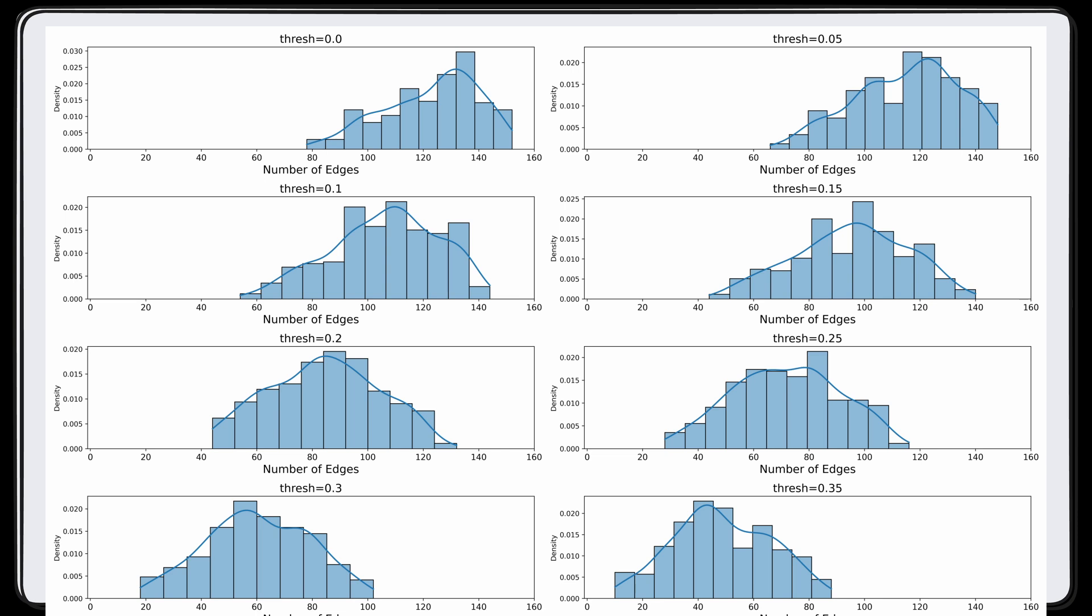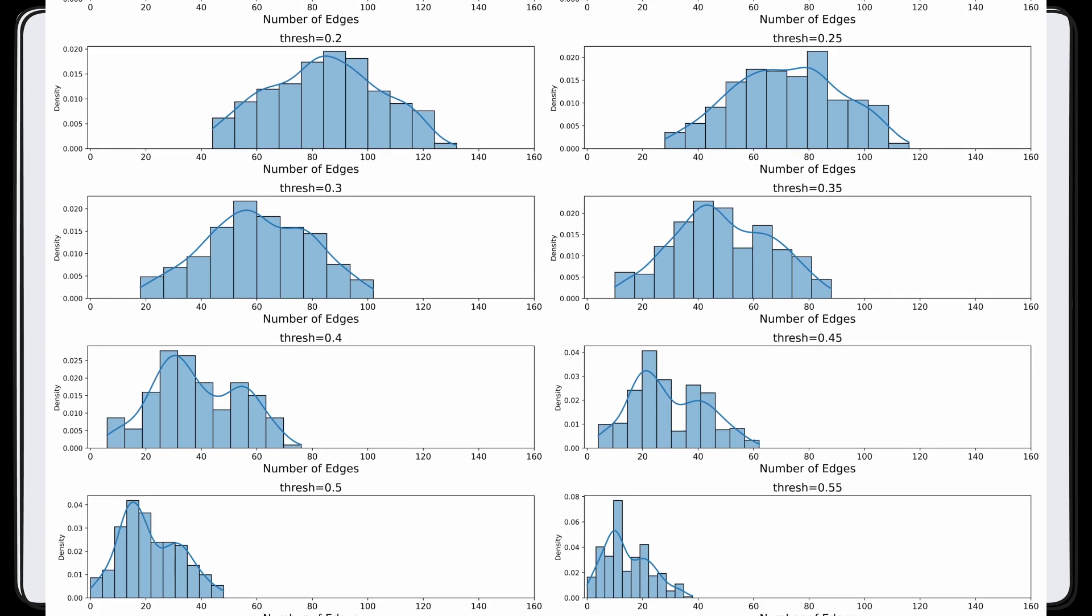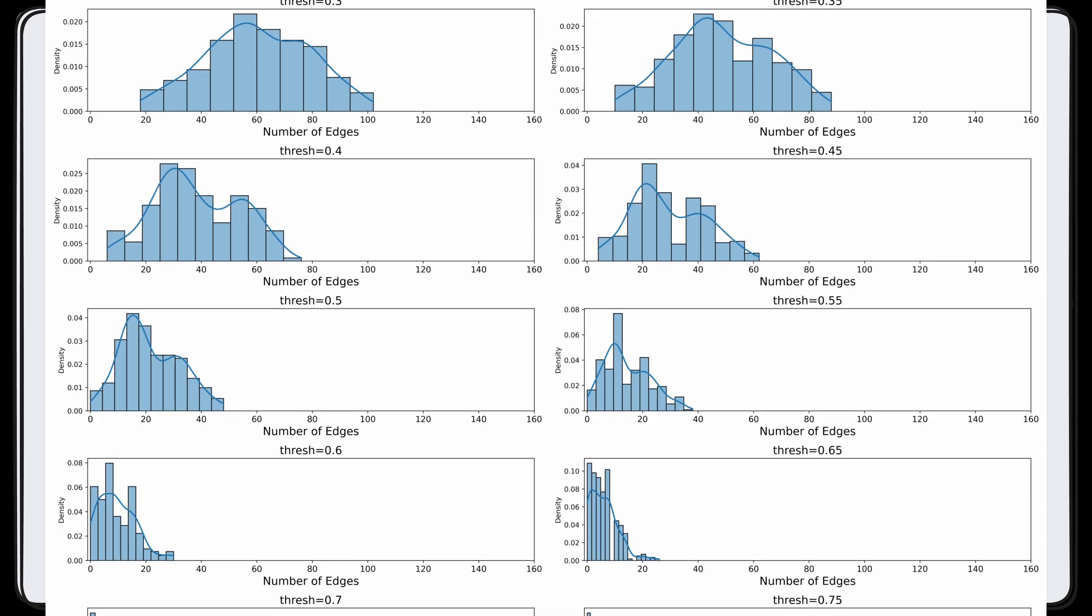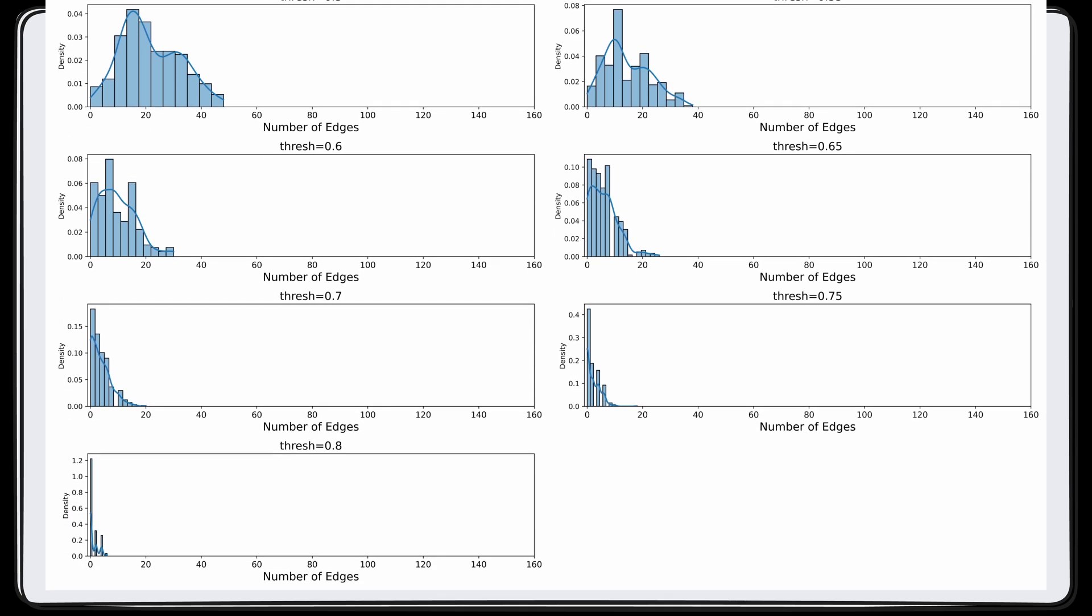First I just wanted a sanity check by showing that if the threshold needed to create a graph edge gets higher, then we see that the distribution of the number of edges in the graph shifts more and more to the left, which makes total sense. I personally find that when you have a lot of moving parts like we do here, these little sanity checks are really helpful to make sure that there's no bugs in your code or your methodology.